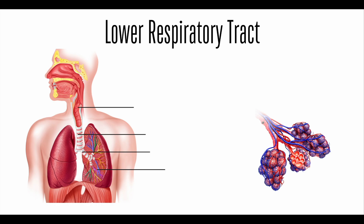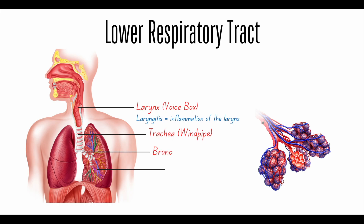Next, we have the lower respiratory tract. In the lower respiratory tract, we have the larynx, or the voice box. When somebody has laryngitis, they have an inflammation in the larynx and they have that raspy voice. We also have the trachea, which is the windpipe, the bronchi, bronchioles, and alveoli. If there's one thing I want you to take away from this lecture, it's that the alveoli is where gas exchange occurs. Write that down, because I guarantee you will see it on the TEAS exam.